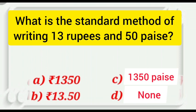We will read the options. Option A, rupees 1350. Option B, rupees 13.50. Option C, 1350 paise and option D is none.